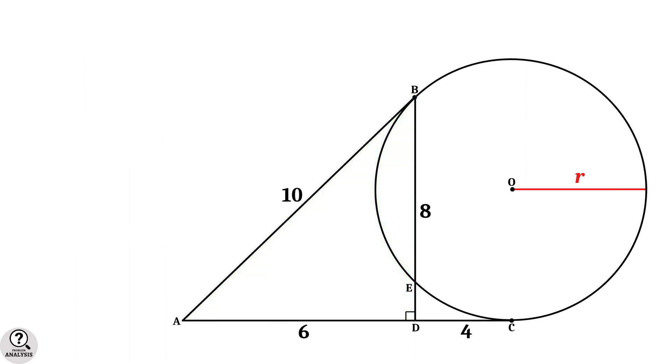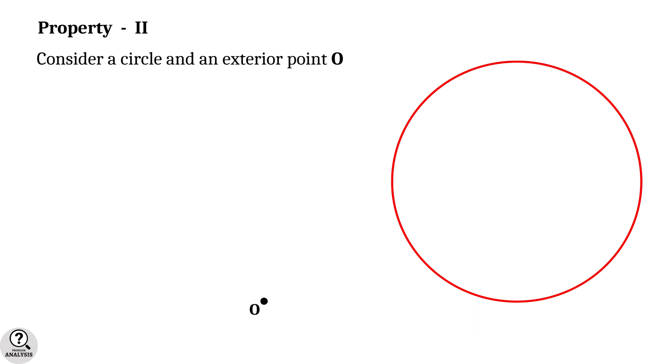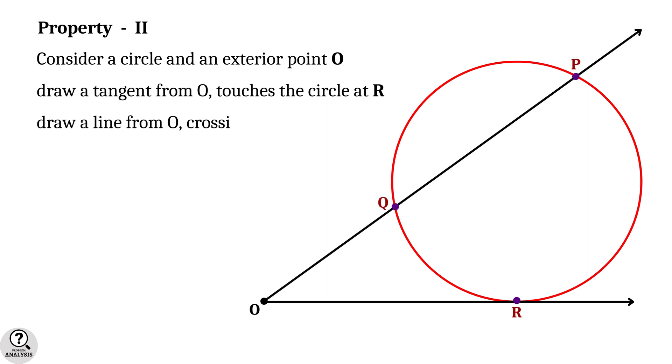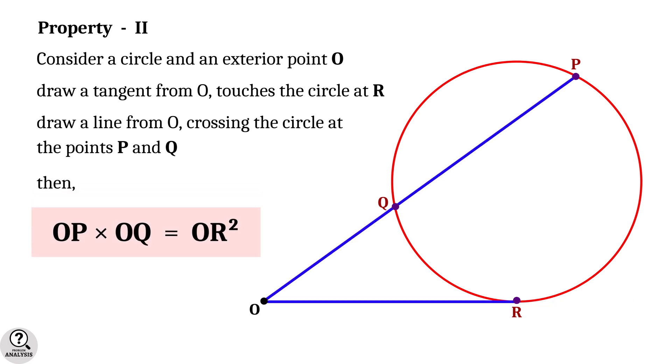At this point, we have to know the next property of tangents to a circle. So, property 2. Consider a circle and an exterior point O. Draw a tangent from the point O that touches the circle at R. Now draw a line from O that crosses the circle at the points P and Q. Then the fact is OP into OQ equal to OR square. That is, the product of the lengths OP and OQ is equal to the square of the length of the tangent OR.